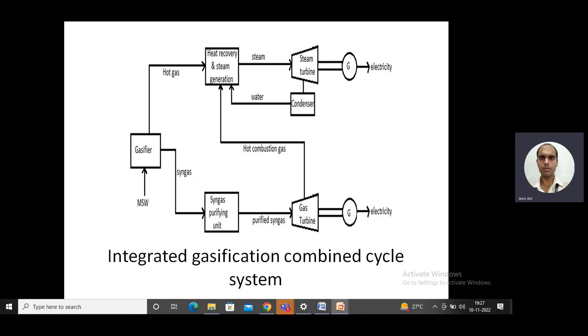This steam produced is further used to run steam turbines, something very similar to conventional power plants, thermal power plants. This steam turbine is coupled with the generator and that is also producing electricity.